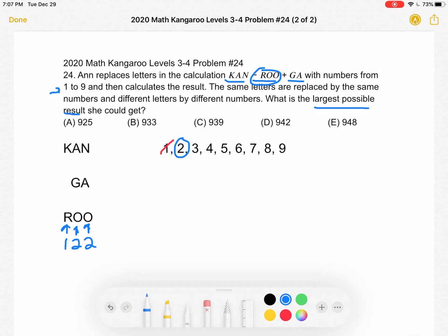So our number ROO is 122. And because there's no more O's anywhere, we can cross off the 2. We can't use it again.